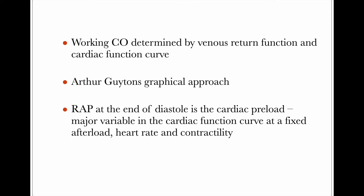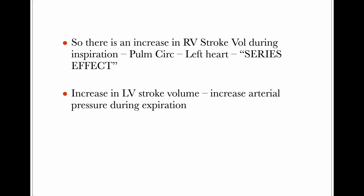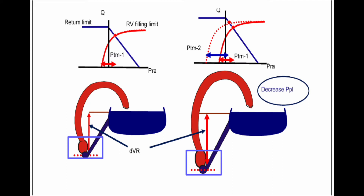Coming to the interaction between the heart and lungs: the heart is surrounded by pleural pressure. During spontaneous inspiration, pleural pressure becomes more negative, which causes inflow of air from the atmosphere into the lungs. This lowers the heart pressure relative to the body. The fall in RAP is relative to atmosphere and not to the capacitance vessels of the body. So the pleural pressure falls more than RAP, resulting in increased RV stroke volume during inspiration.